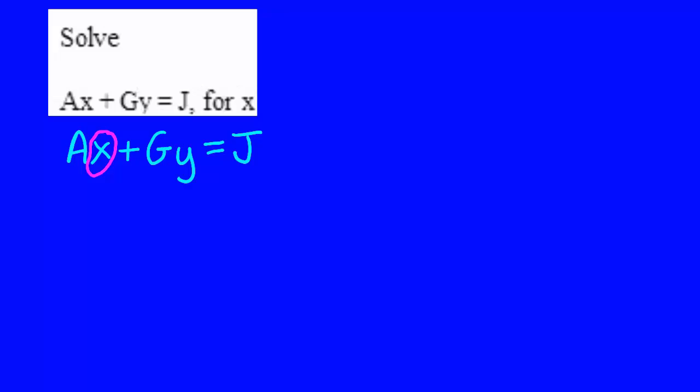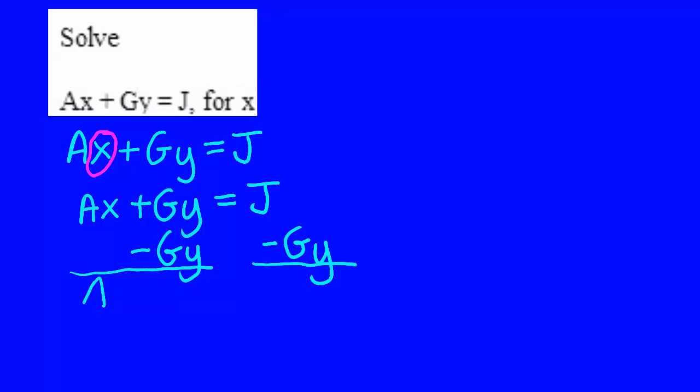x is what I'm looking for. So, first I have to solve for the ax term and I'm going to do that by subtracting gy from both sides of this equation. Since gy is added onto the ax, it's much easier to remove it because addition and subtraction are loose bonds. The left side of the equation will equal ax plus 0. The right side will equal j minus gy.